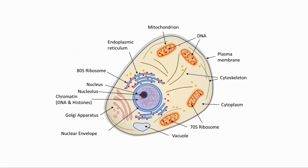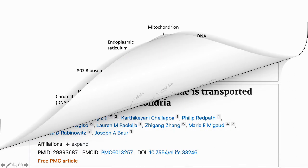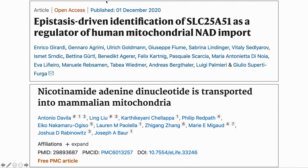Let me start with a little background. Here is an illustration of a typical mammalian cell. Inside the cell, along with other organelles, are the mitochondria. I have just outlined two of them near the top of the cell. Two papers we will look at today are looking at how NAD from the main area of the cell gets into the mitochondria.